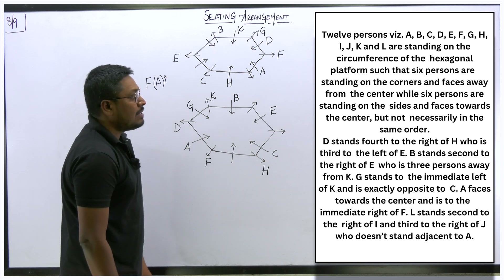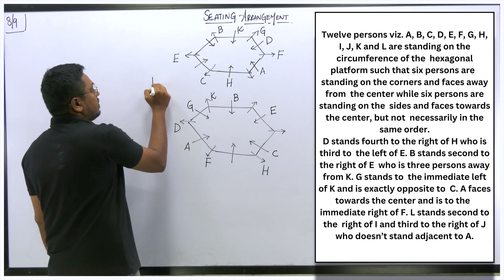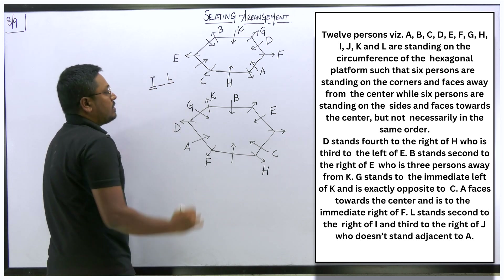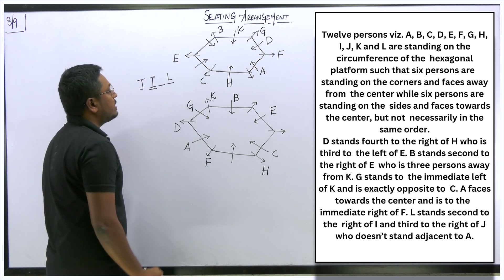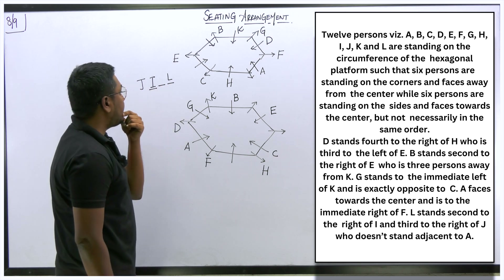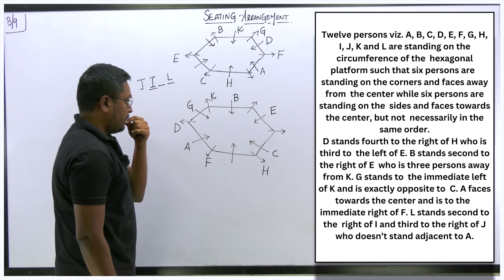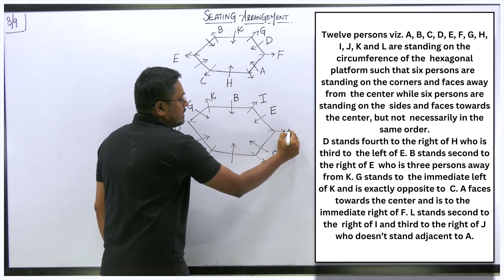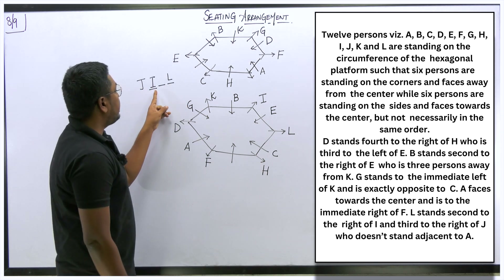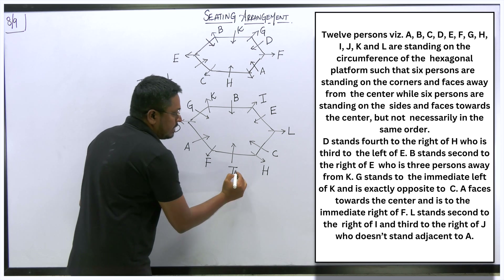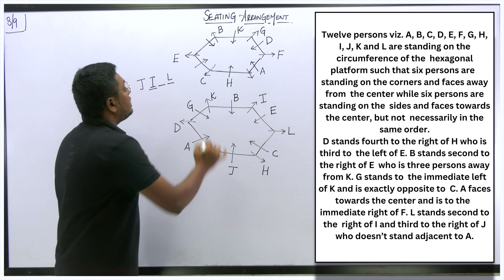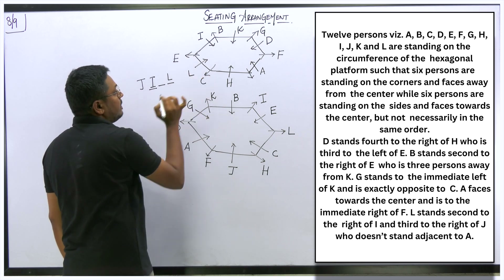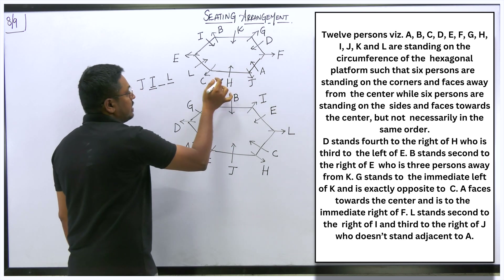L stands second to the right of I, and third to the right of J. So I's right-hand side at the second place is L, and J's right-hand side at the third place is L. I fix I and J in both diagrams to satisfy both conditions simultaneously.